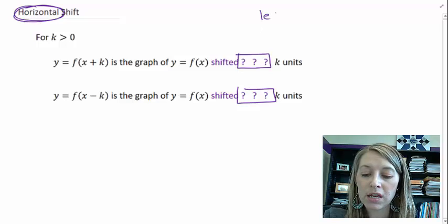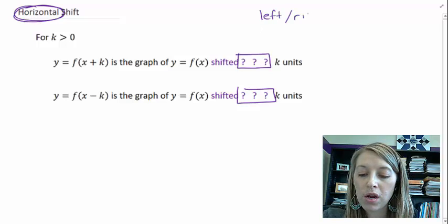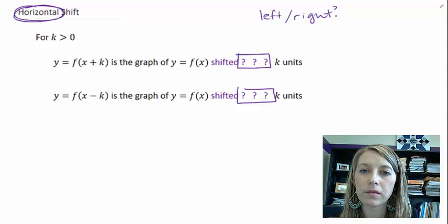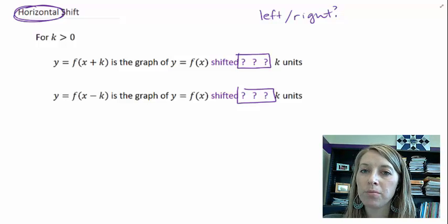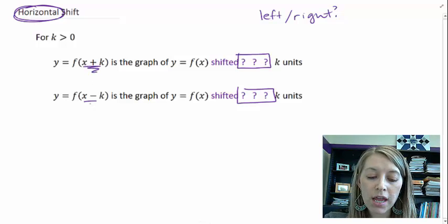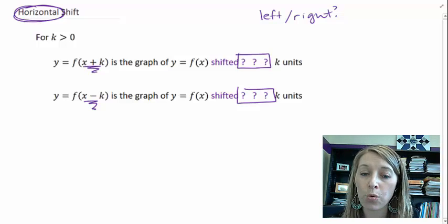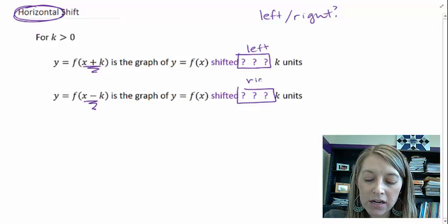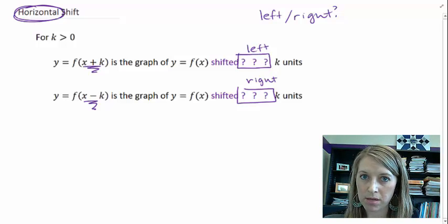I'm going to guess that you picked the wrong direction. Anytime something happens on the inside of the function, it actually happens in a backwards fashion. So if I add k, it's actually going to shift it left k units. If I subtract k, it's actually going to shift it right k units.